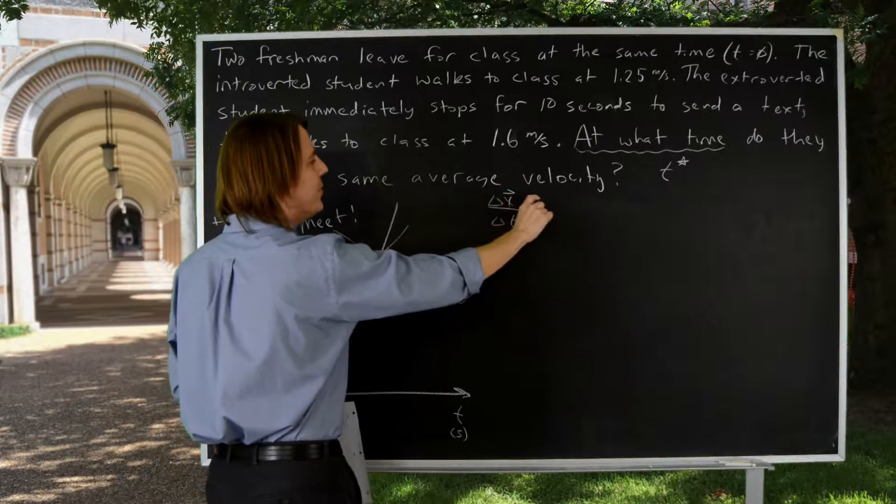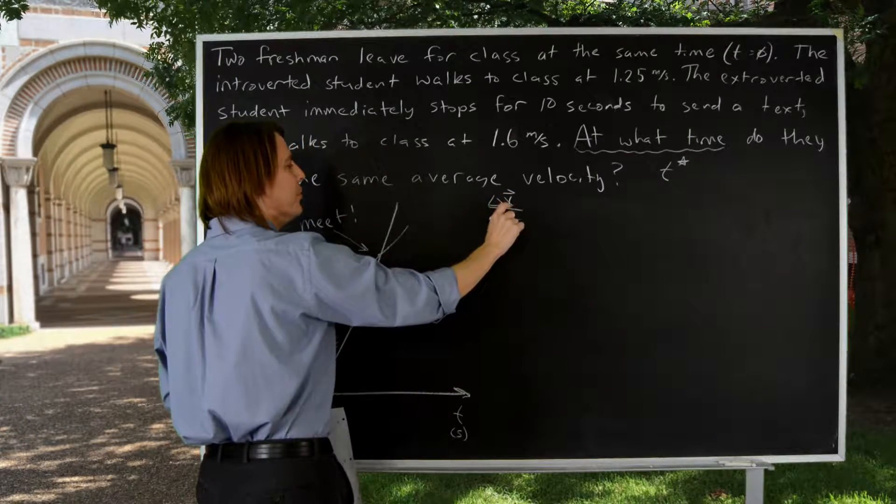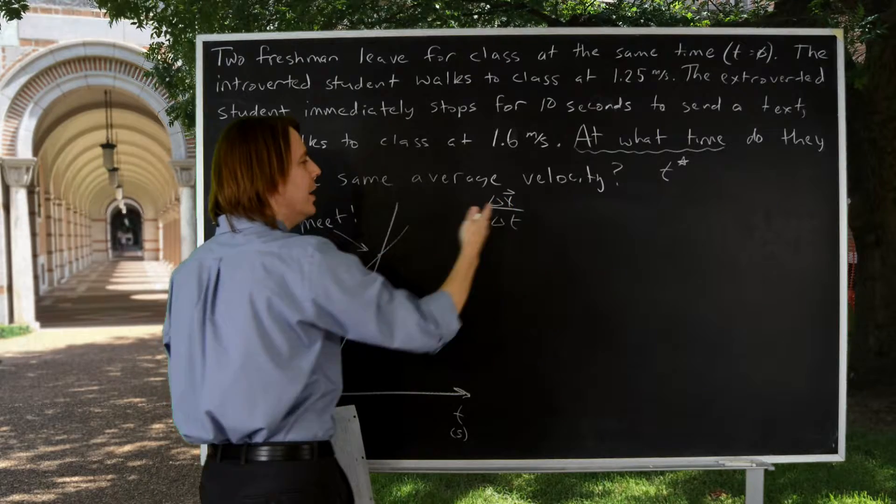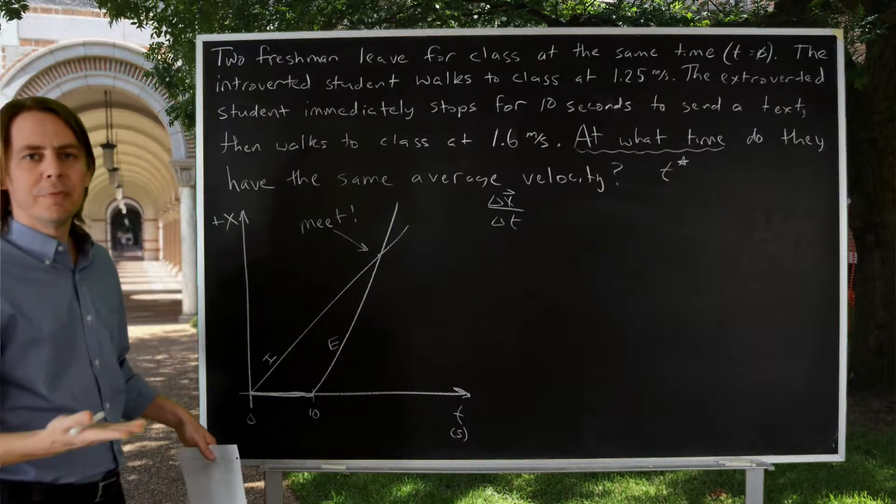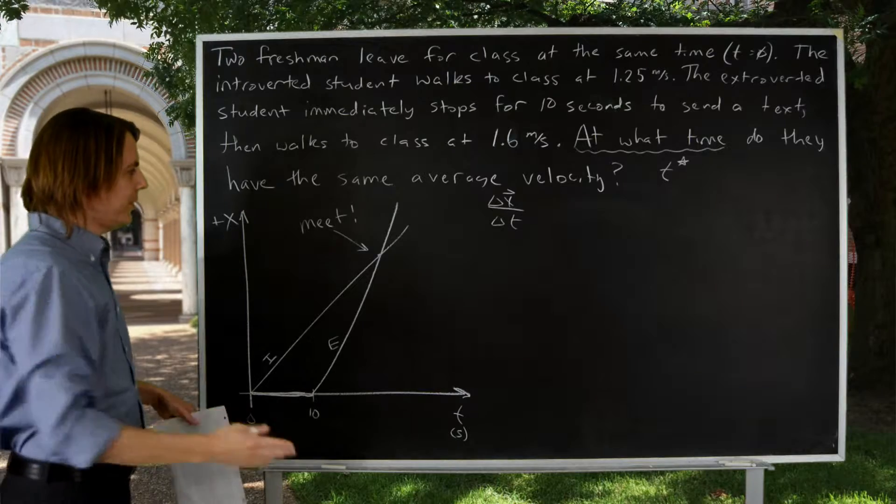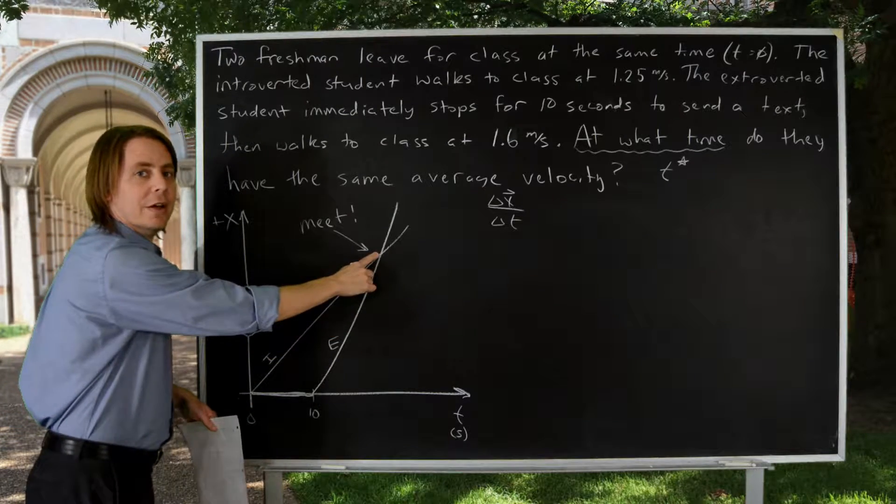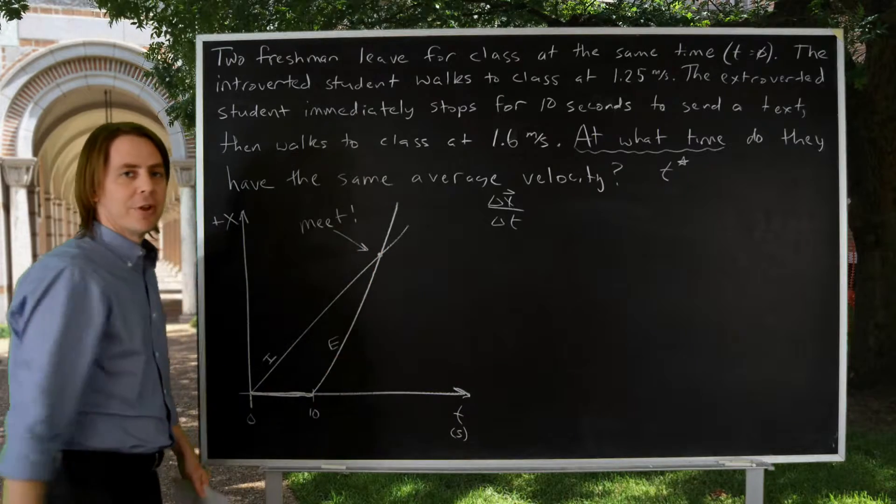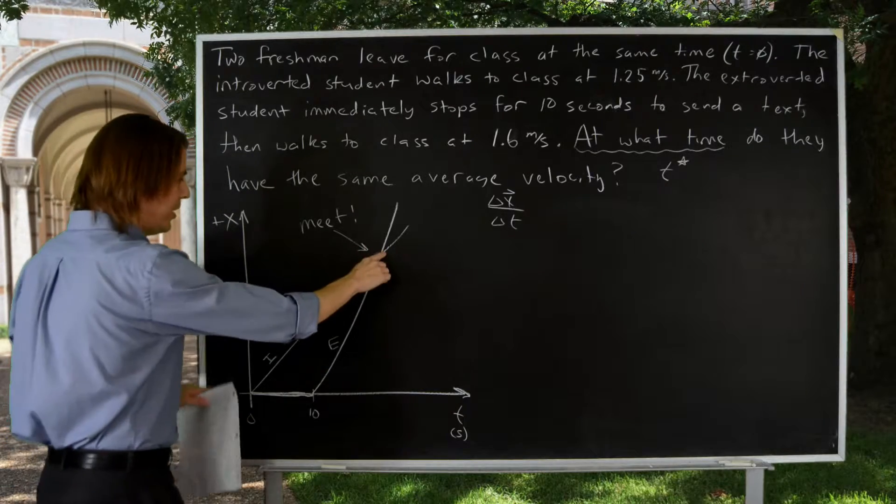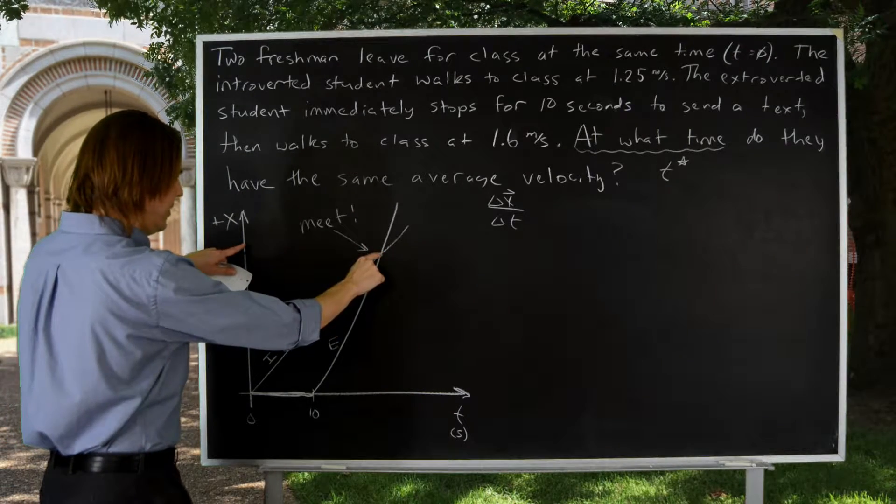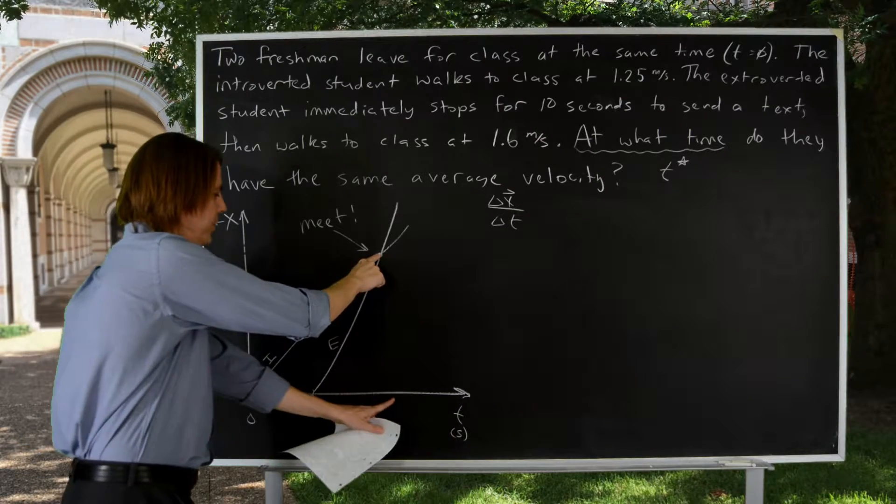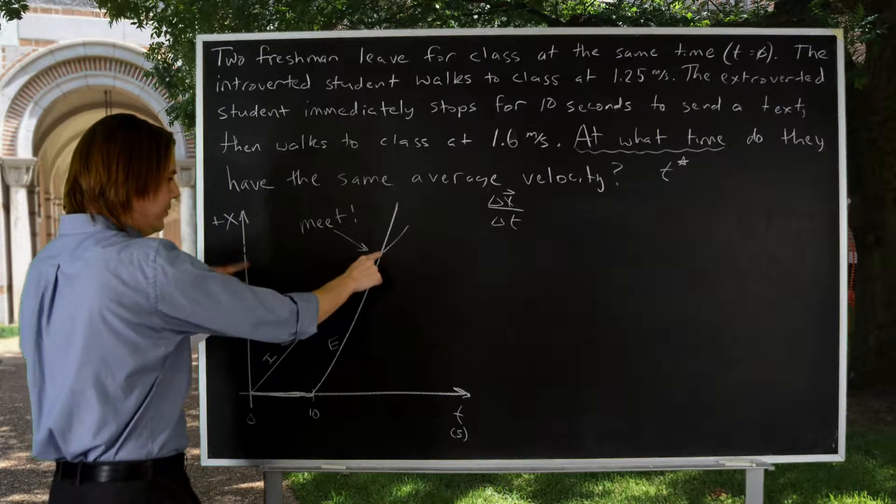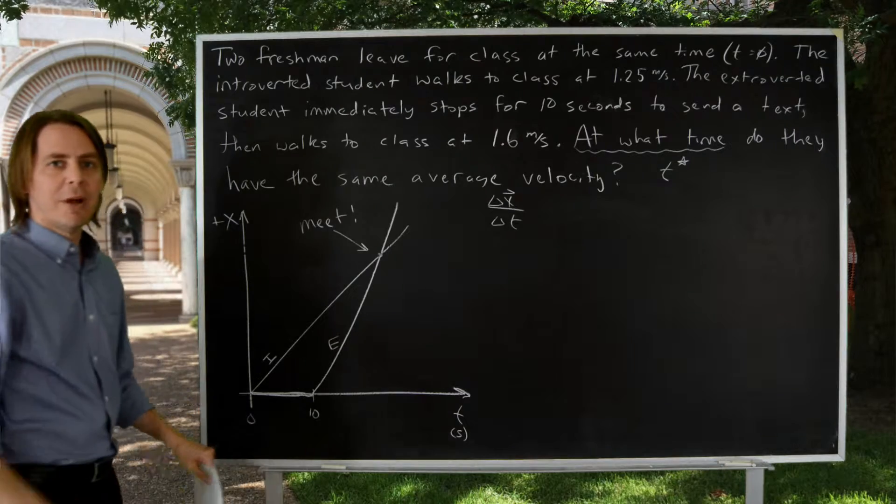So if we wanted these two to have the same displacement over t star, displacement over t star, it's really saying, when do they have the same displacement? Well, they have the same displacement when they met. So from your plot, you can kind of get an idea, oh, I'm really looking for this, I'm looking for that time right there. Because at this time, introverted student has this displacement over this time, and extroverted student has this displacement over this time. They have the same average velocity.